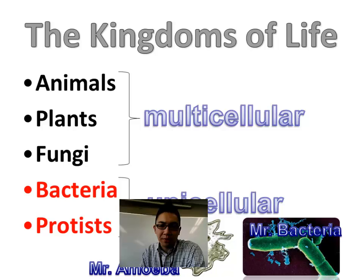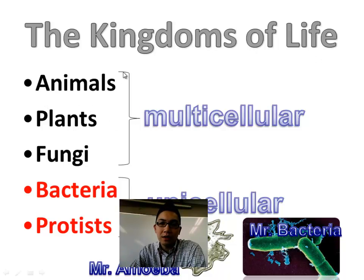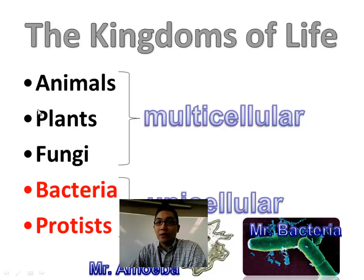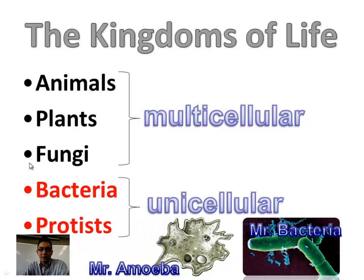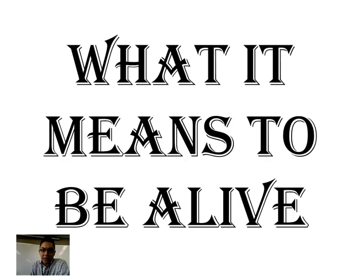Amoeba is the famous example of a protist; others include paramecium. You can name a few examples of each kingdom: animals — lion; plants — sunflowers, dandelions; fungi — shiitake mushrooms, enoki mushrooms, eringi mushrooms; bacteria also fits in there. Pause the video and ask yourself what it means to be alive — we're going to fly through those characteristics really fast.